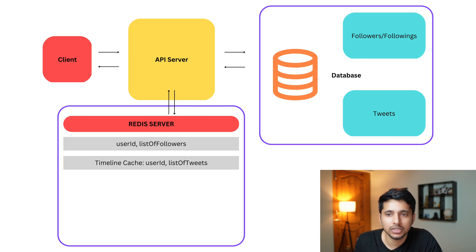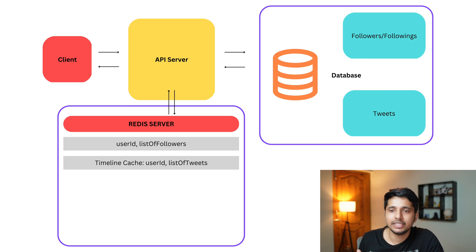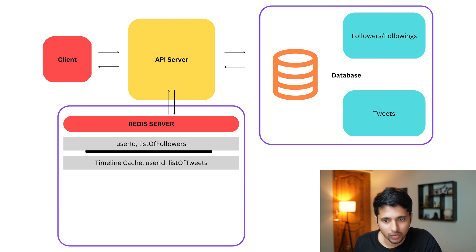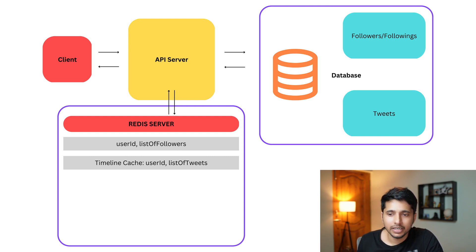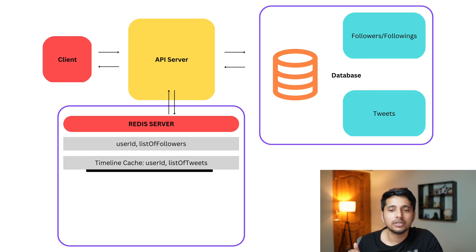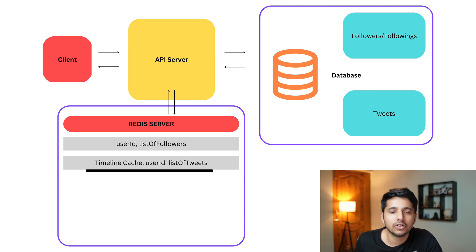However, there is a new problem with this approach. This solution works perfectly when we do not have celebrity users. A celebrity user is someone with millions of followers. If a celebrity tweets, using the current fanout approach we first find all their followers — which is millions — and then insert the tweet into the timeline cache for each of those millions of followers. That means millions of insertions, which takes too much time and becomes a bottleneck.